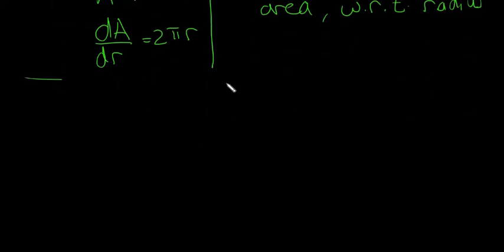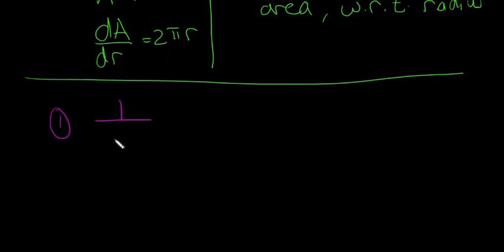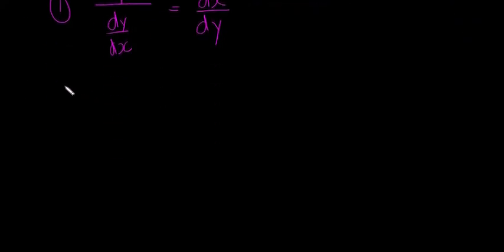I'll move on and do the two rules that we're going to encounter when doing these kind of questions. Rule number one is that 1/(dy/dx) is equal to dx/dy. And the reason that's useful is that if they ask for dx/dy, sometimes it can be really hard to calculate it, but if you just get dy/dx and then put 1 over dy/dx, you can calculate dx/dy. And again, this will make more sense in an example, so I'll just go on and look at rule number two as well.